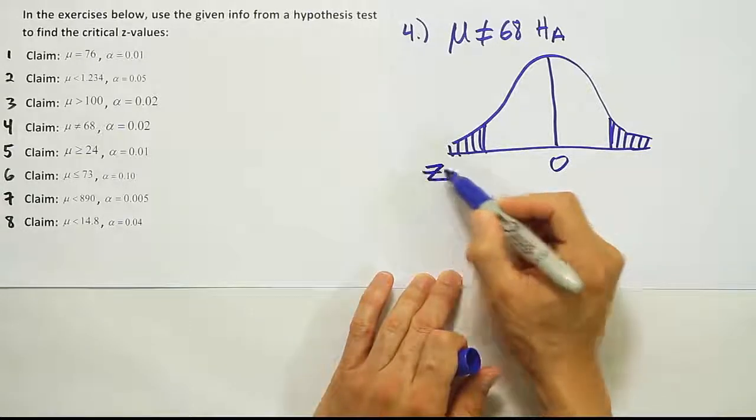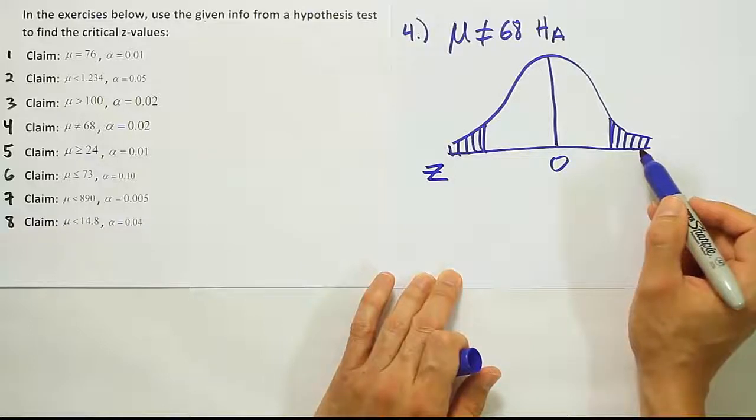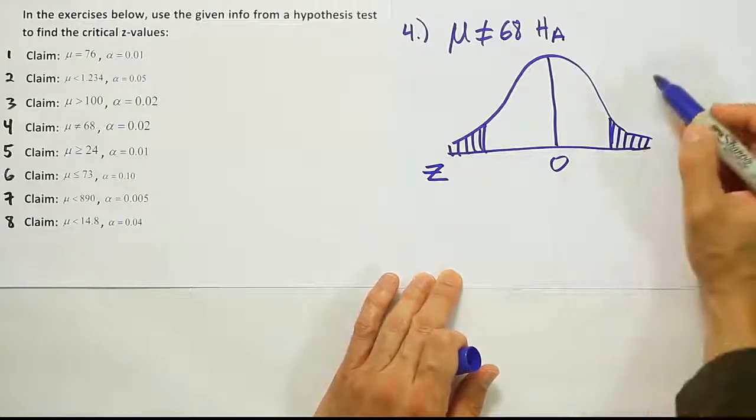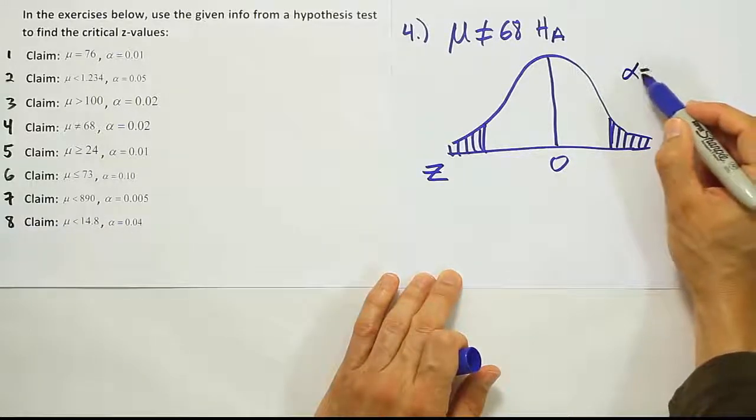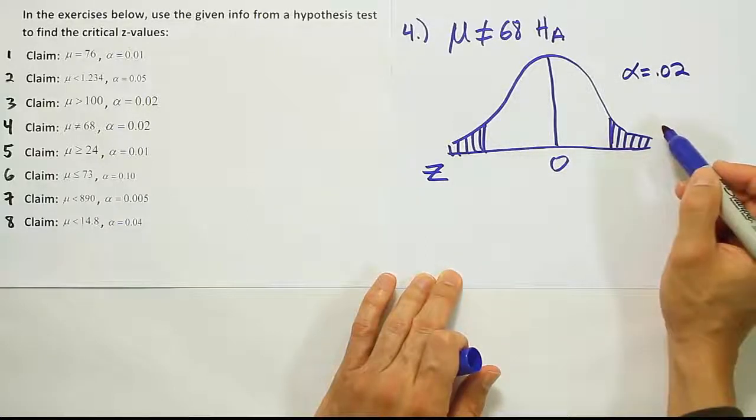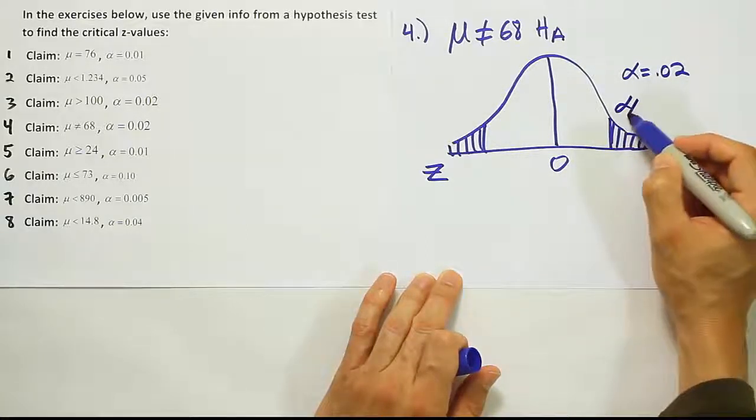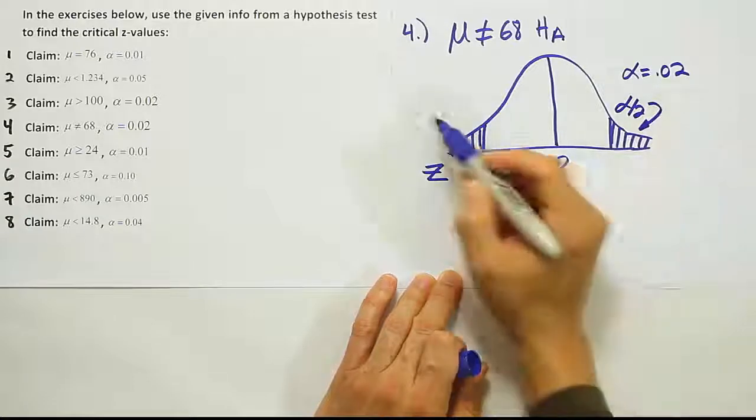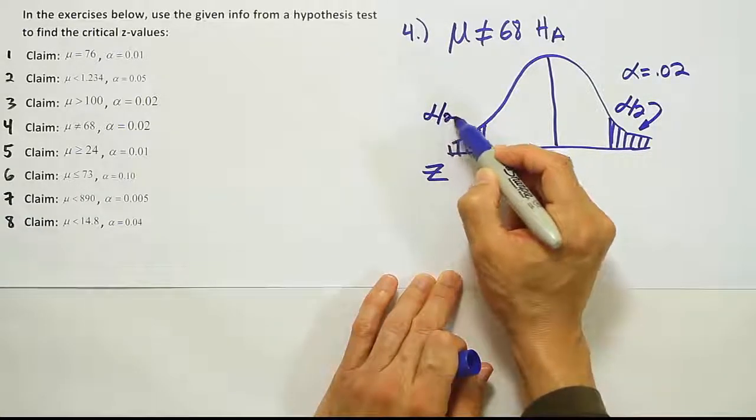We're looking for the critical z value when alpha is 0.02. Alpha here is 0.02, but we're dividing it into two tails, which means that we will have alpha over 2 in this tail and alpha over 2 in this tail.